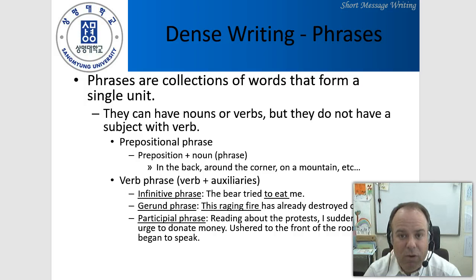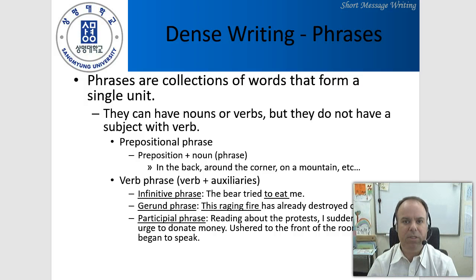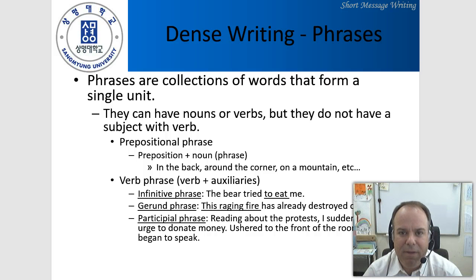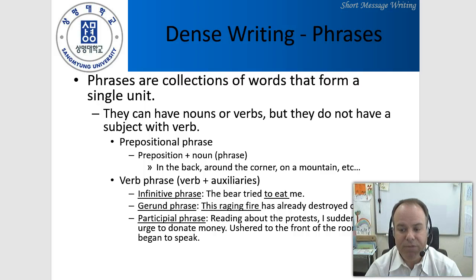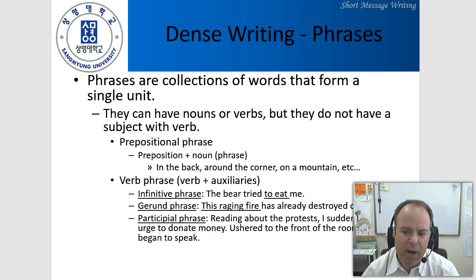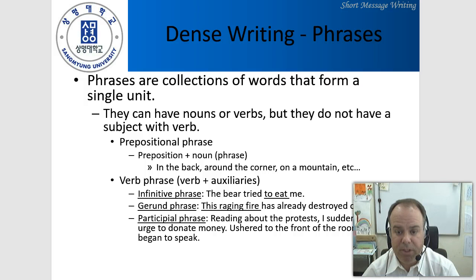The next set here are phrases. Phrases are collections of words that form a single unit. We often hear about prepositional phrases — that's one type — and there are many others: noun phrases, verb phrases, and more. The difference between a phrase and a clause is simply that a phrase doesn't contain both a subject and a predicate. You have prepositional phrases, which are a preposition plus a noun phrase — 'in the back,' 'around the corner,' 'on a mountain.' You can also have verb phrases: a verb plus auxiliaries, like 'the bear tried to eat me.'